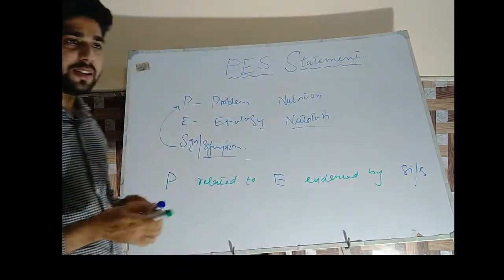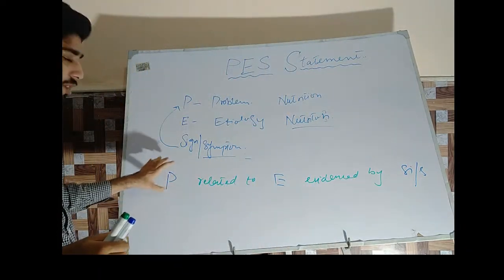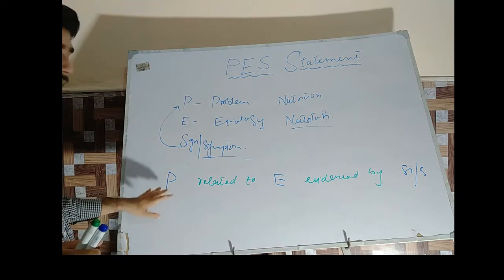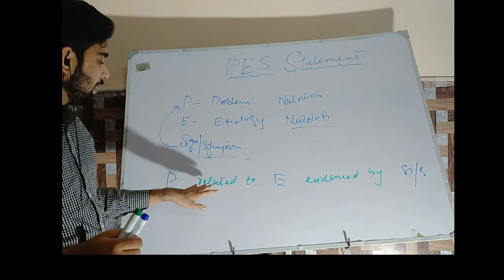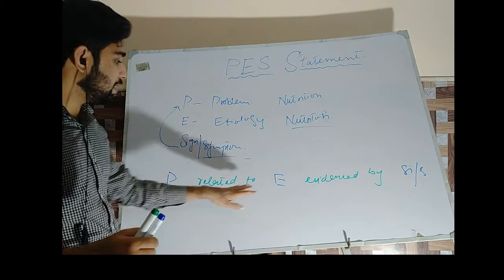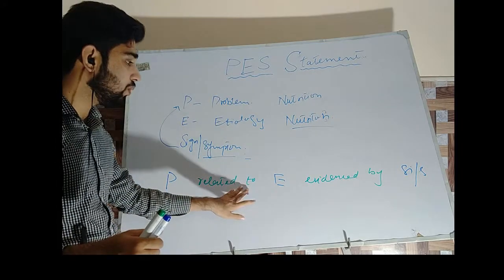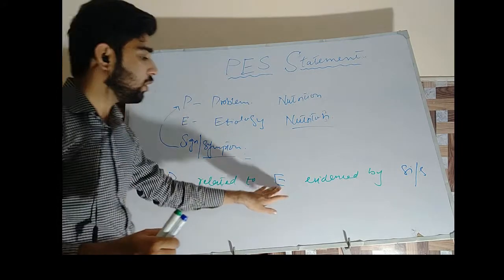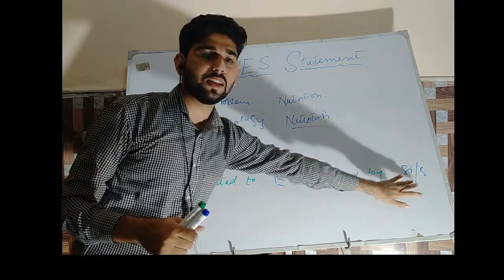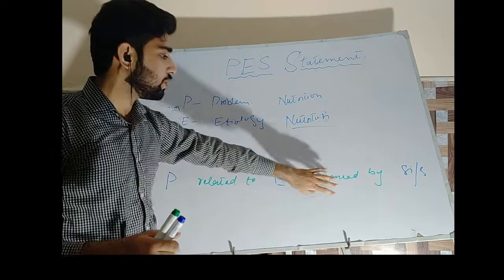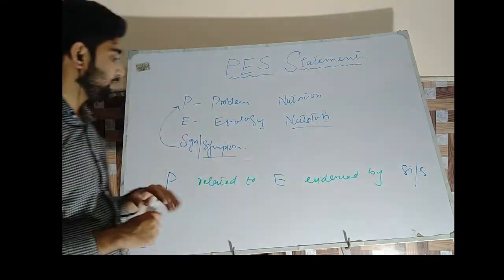So we write the PES statement as: in the start we write the problem, then relate it with etiology using the words 'related to,' and then the etiology is linked with signs and symptoms using the specific words 'evidenced by.'